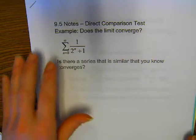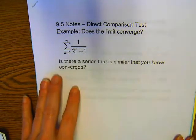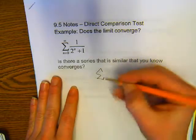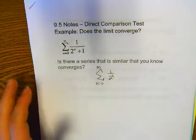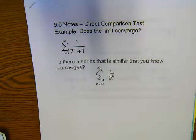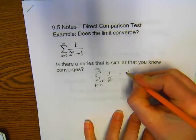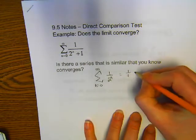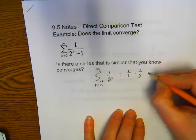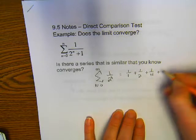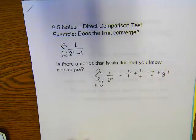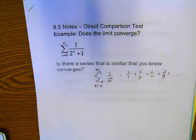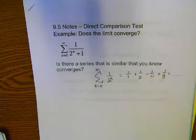Looking at this particular series, it is similar to something that we know converges. I'm going to look at the terms of something simpler, which is 1 over 2 to the nth. We know that this converges because this is a geometric series — 1, plus 1/2, plus 1/4, plus 1/8, and so on — with r less than 1.